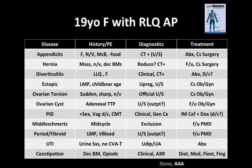Appendicitis is the obvious concern for anyone with right lower quadrant pain. Other things to look for are presence of fever, nausea, vomiting, and McBurney's tenderness. Something that should be absent is hunger. To me, a positive cheeseburger at the bedside has pretty good negative predictive value for appendicitis, as does the positive cigarette break or the positive sunglasses sign.